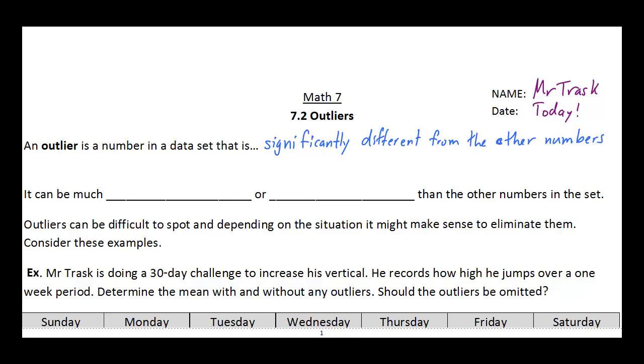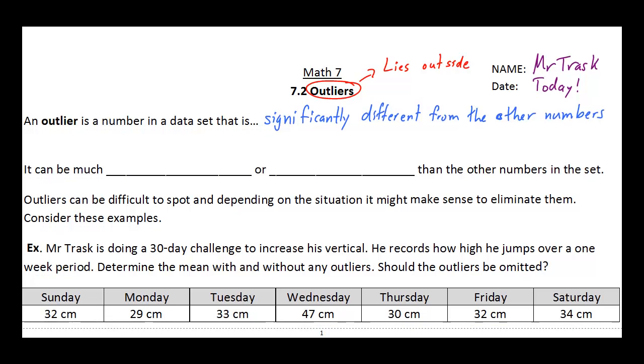Okay, I mean, if you look at the word itself, outliers, it literally means lies outside. So it's a number that lies outside of the regular data set. And there's a lot of reasons why outliers can occur. They can be either larger or smaller than the rest of the data set. And basically you're just looking for something that doesn't really fit with the rest of the numbers that you've collected.